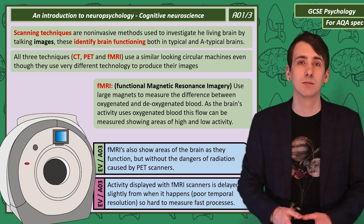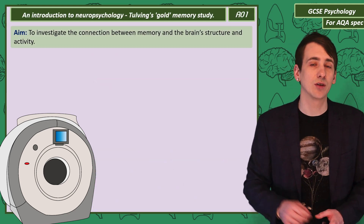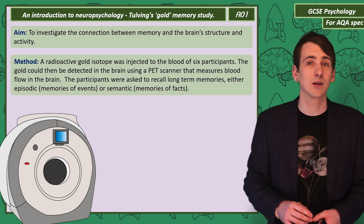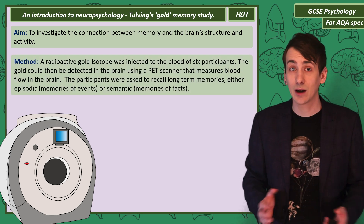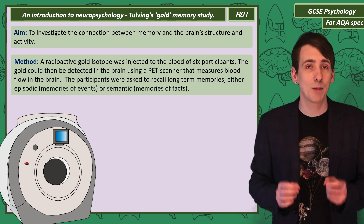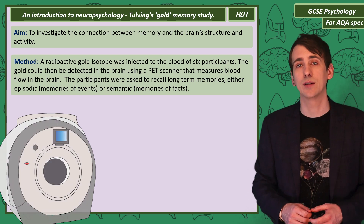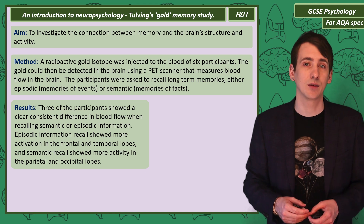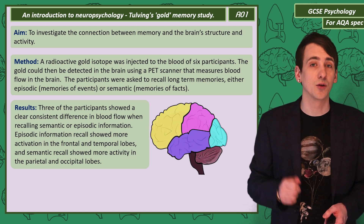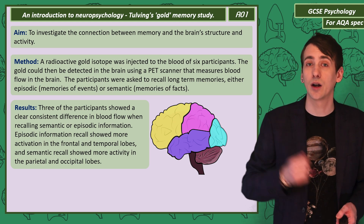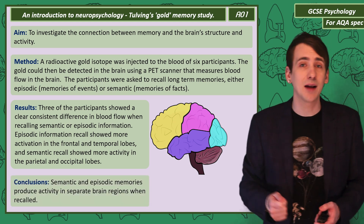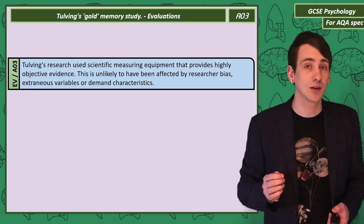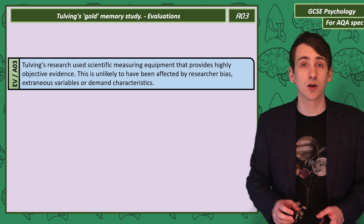A classic psychology study using a PET scanner was by a researcher called Tulving. Tulving wanted to investigate the connection between types of long-term memory and the brain's physical structure. He injected a radioactive gold isotope into the bloodstream of six participants, including himself and his wife, and this could be detected using the PET scanner. Participants were asked to recall either episodic or semantic long-term memories. Three participants showed a consistent difference in blood flow: recalling episodic memories activated areas of the frontal and temporal lobes, while semantic memories activated the parietal and occipital lobes. Tulving concluded that semantic and episodic memory are separate processes using separate brain regions. The use of an objective scientific measuring device under laboratory conditions provided strong evidence for his theories about long-term memory.